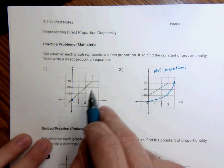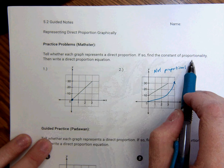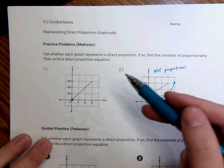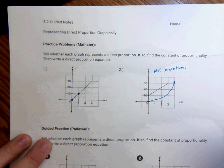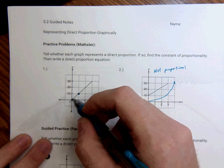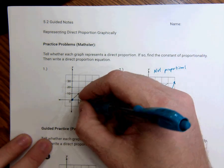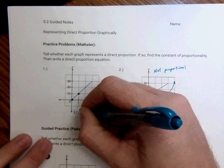This one right here is proportional. And if so, find the constant of proportionality. So the way we do that is we look at a point that it goes through, not 0,0. They all go through 0,0. And we look at that point. This point is 1,10.